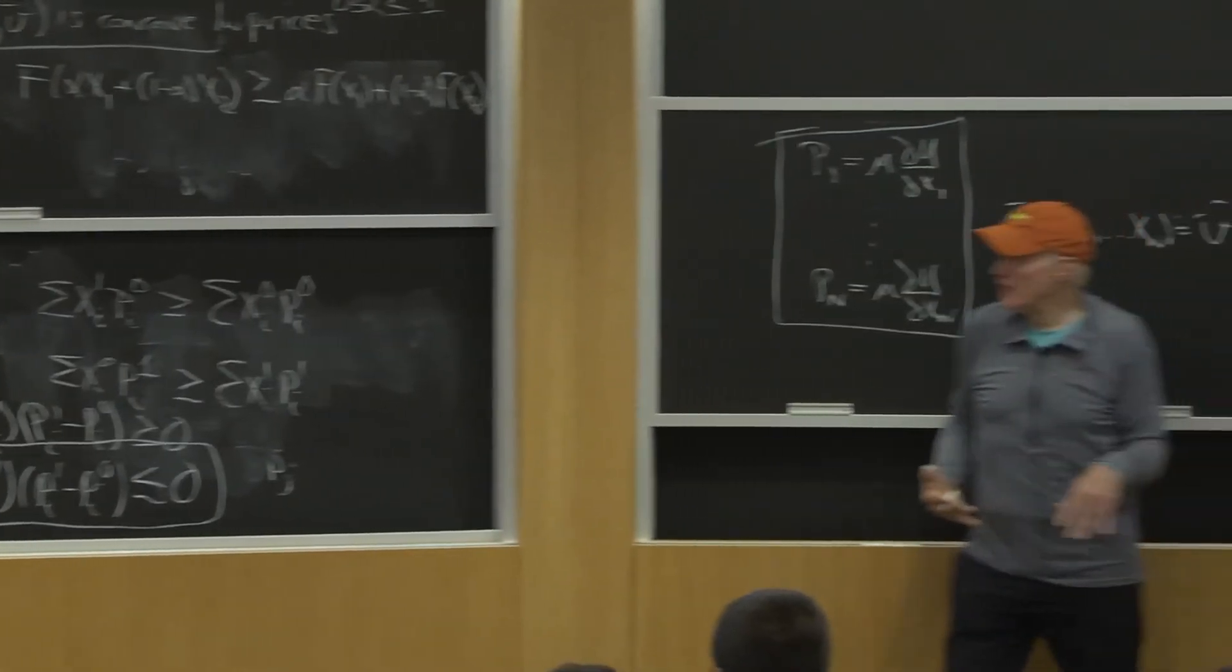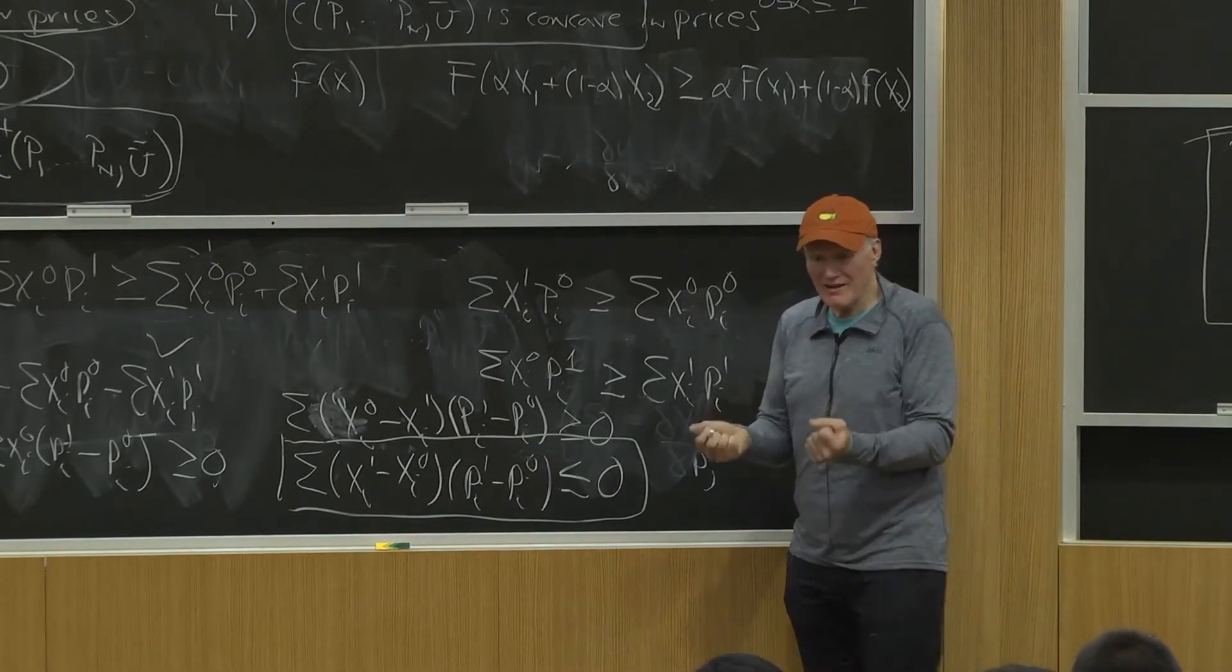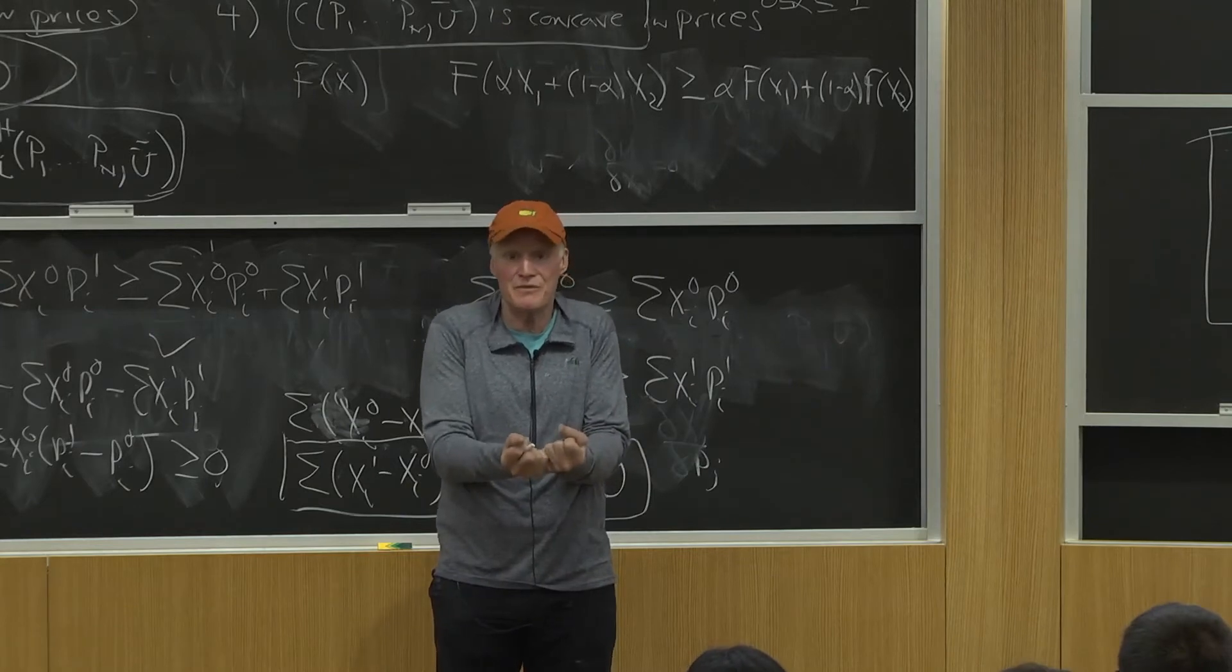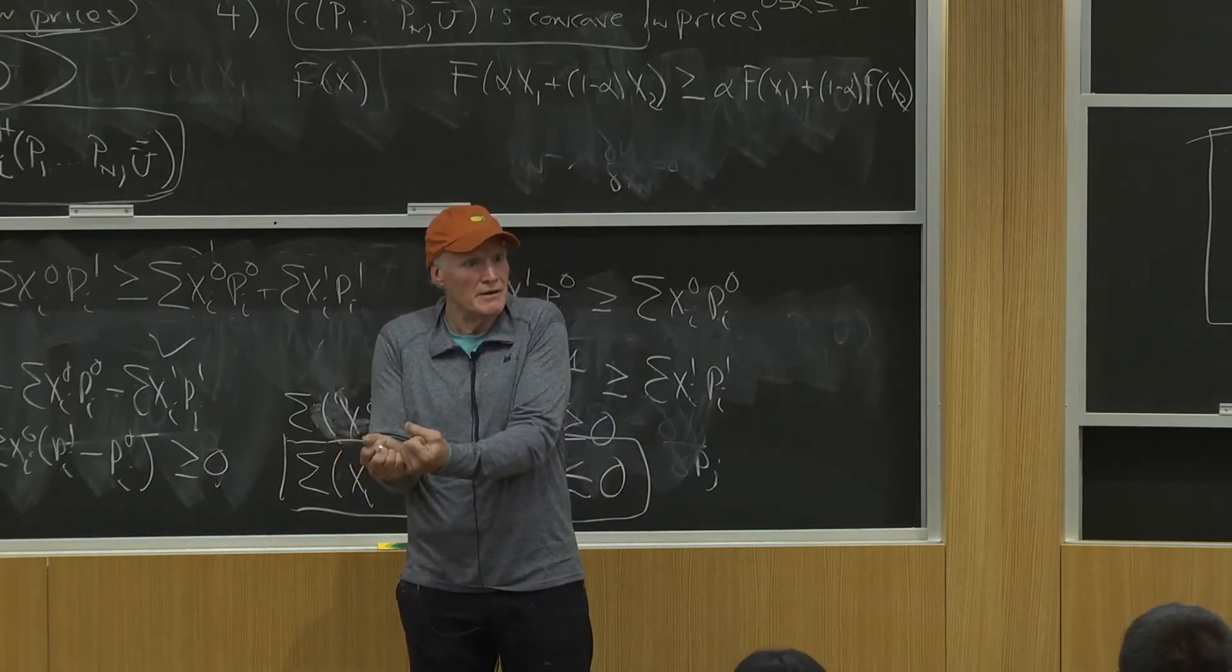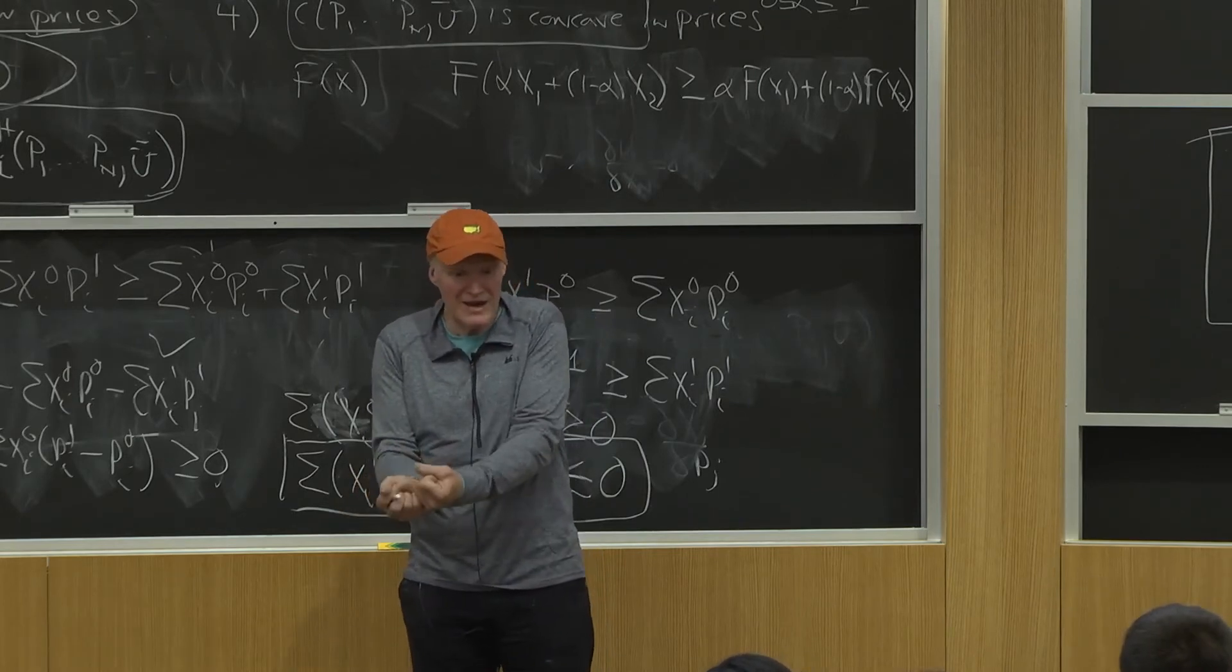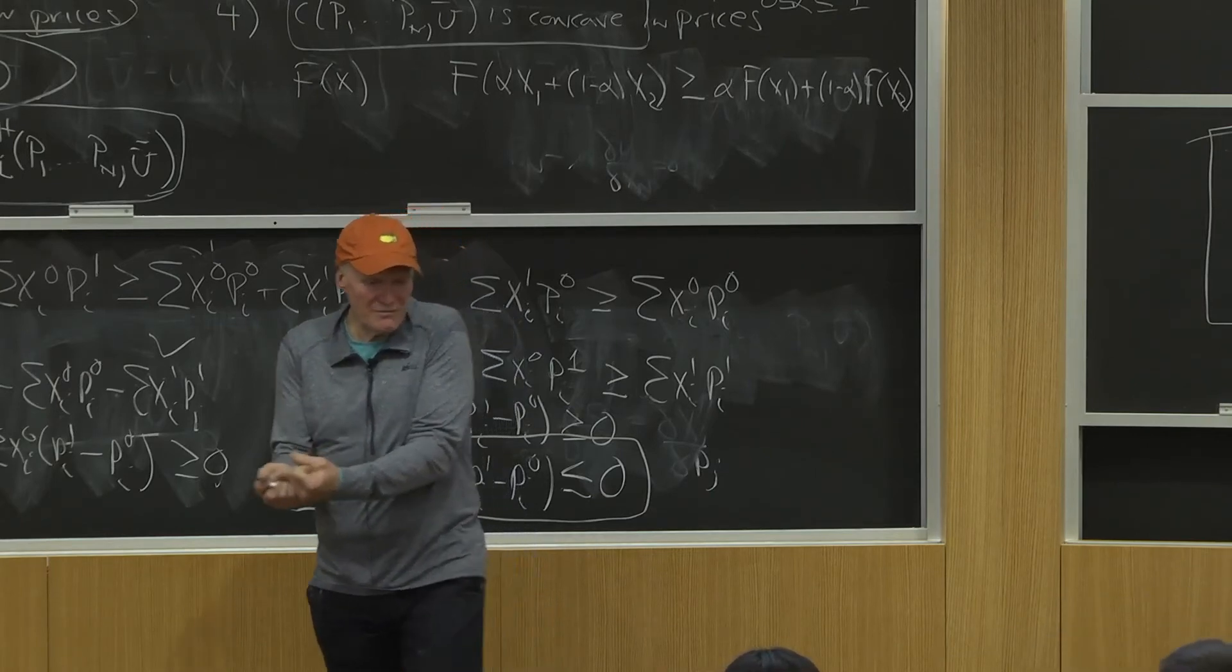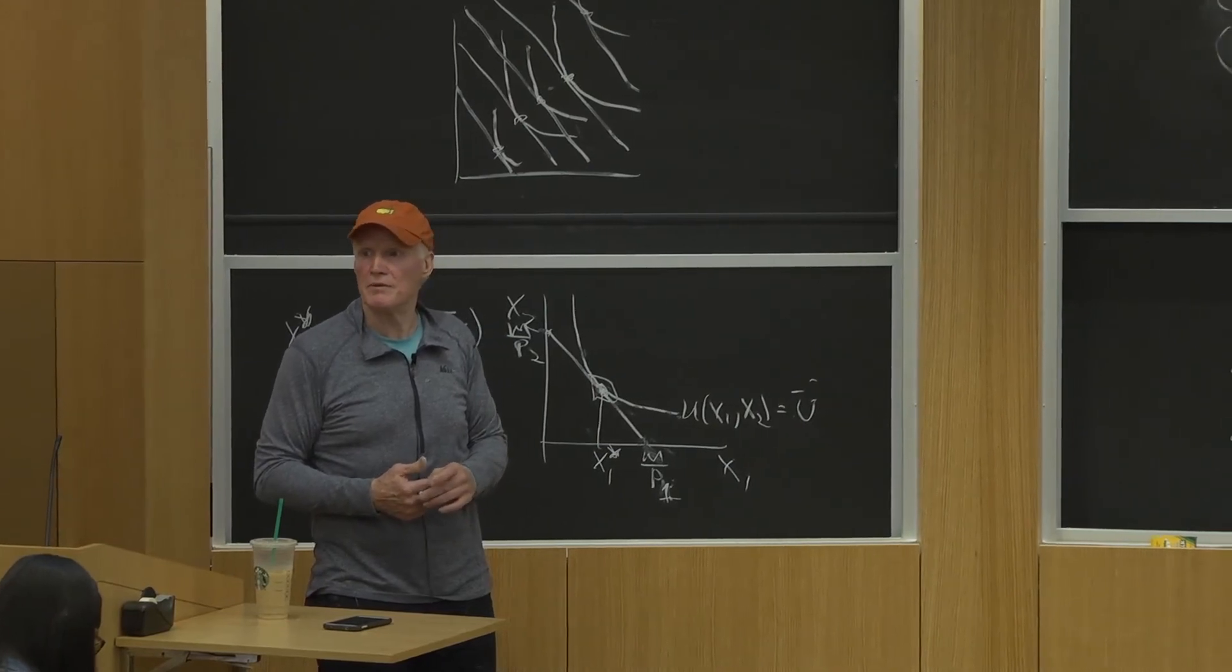For the Hicksian demand curve, the law of demand just comes right out of cost minimization. Think about the cost minimization problem. How do you minimize cost? You buy a lot of the stuff that's cheap. You can't say it got cheaper therefore I should buy less - that's inconsistent with cost minimization. If you wanted to buy it before, you want to buy it even more when it's cheaper. For cost minimization, it just can't go any other way. If I was lowering my cost by buying 10 units when it was $10 a unit, I can't buy less when it's $9 a unit. For the cost minimization problem, the law of demand is just a direct artifact of cost minimization.